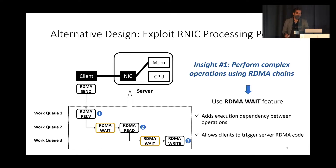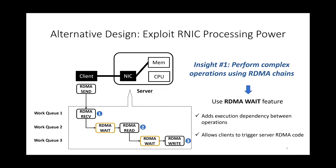The second benefit is that it also allows clients to trigger server-side RDMA code. In this particular example, the RDMA receive number one is being triggered by an RDMA send at the client. After the RDMA receive finishes, it will trigger all the remaining operations in the chain. So this allows the client to flexibly trigger RDMA operations that are pre-posted on the server. Now we have a very simple programming language using RDMA that provides a somewhat richer API than traditional verbs, and it also doesn't require any hardware modifications.